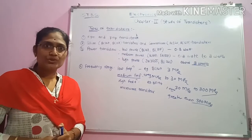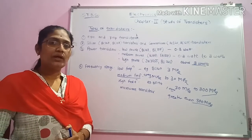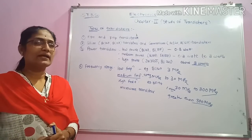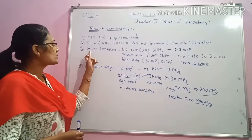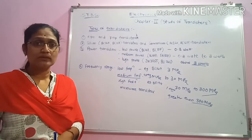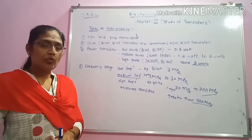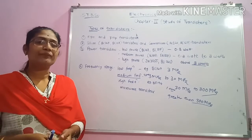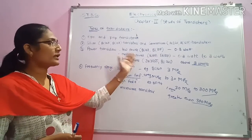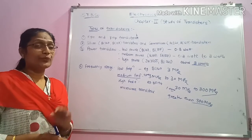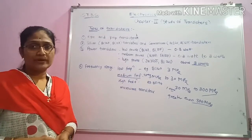The band gap energy of silicon-based transistors is 1.1 electron volt, and because of this high band gap energy, the leakage current they produce is less, and hence they are preferred over germanium transistors. Based on the power dissipated by a given transistor, there are three types: low power transistors, medium power transistors, and high power transistors. Low power transistors dissipate power in the range of about 0.3 watt, and high power transistors dissipate power above 3 watt.